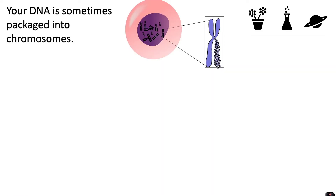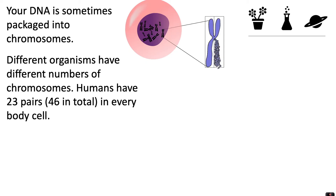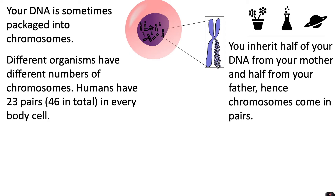Your DNA is sometimes packaged into chromosomes within the nucleus of the cell. Different organisms have different numbers of chromosomes. Humans have 23 pairs, so 46 in total, in every body cell. You inherit half of your DNA from your mother and half from your father, hence the chromosomes come in pairs — 23 from your mother and 23 from your father makes 46 in total.